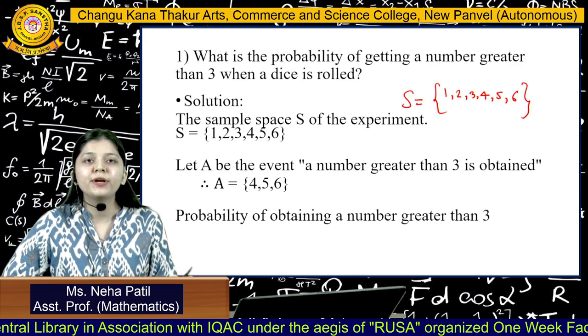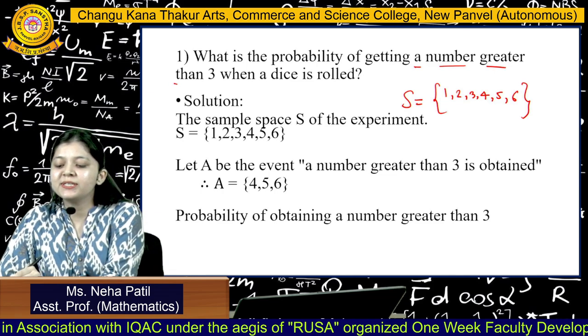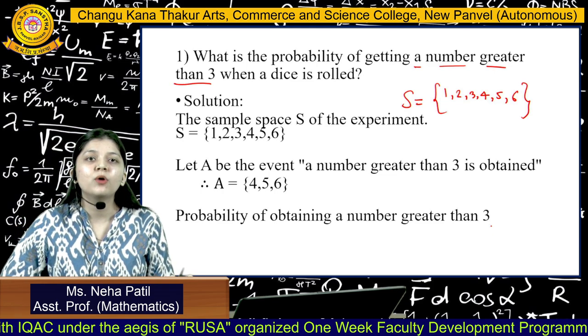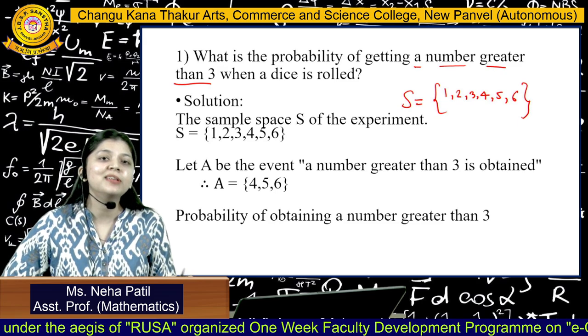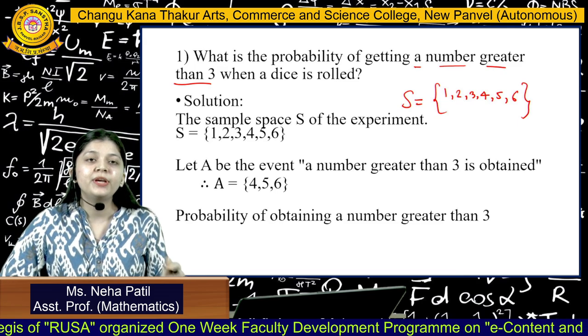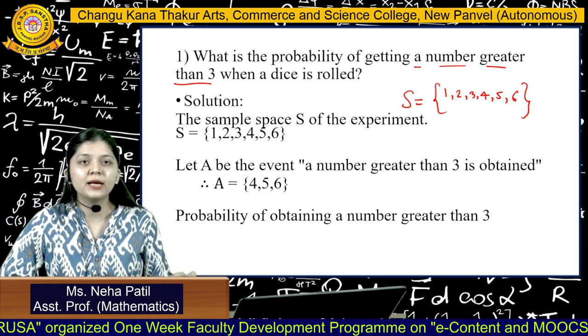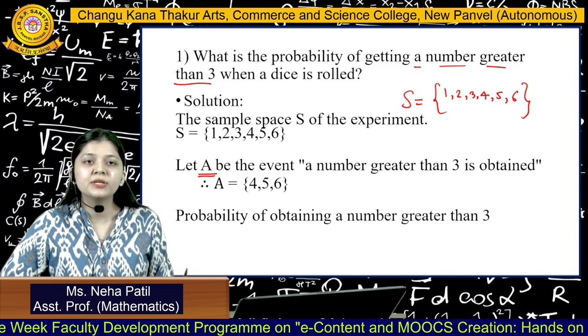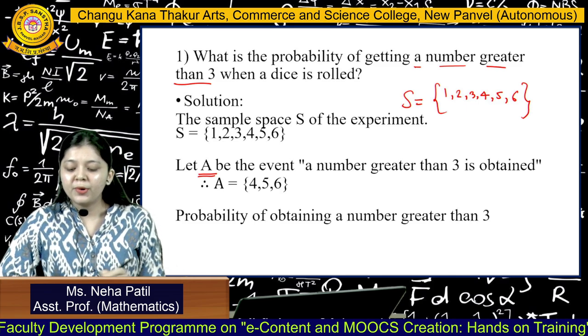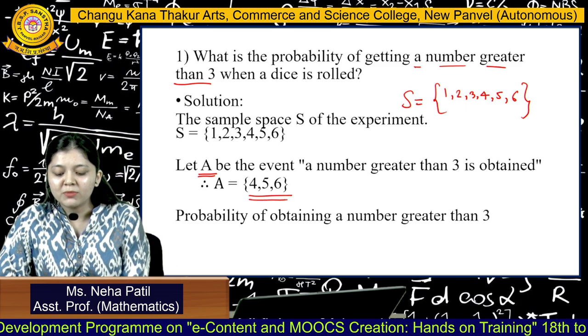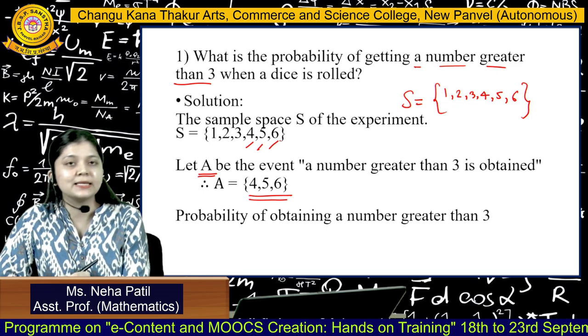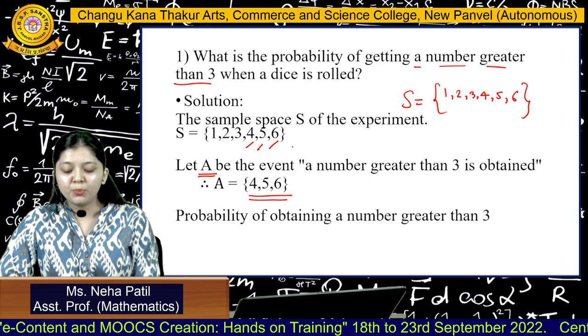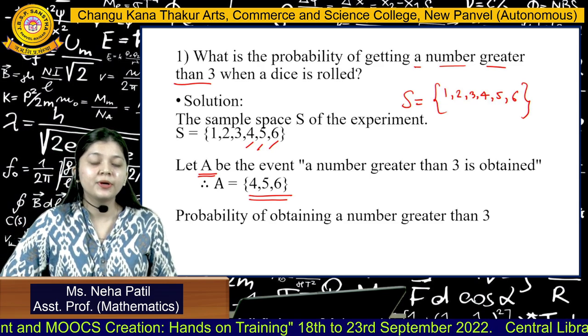We have to find out the probability of getting a number which is greater than 3. Out of all these outcomes, we want to find only that number which is greater than 3. Whenever we define an event, we have to denote it by capital letters. Let A be the event that a number greater than 3 is obtained. The favorable outcomes we have is only 4, 5 and 6.